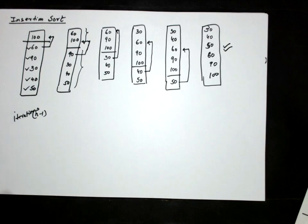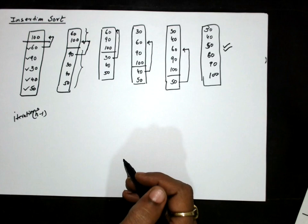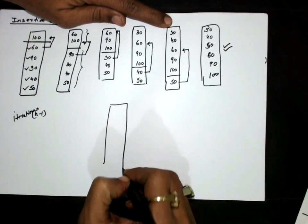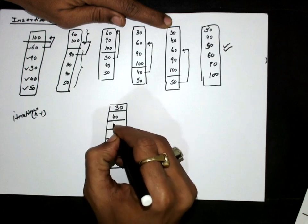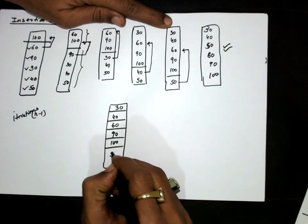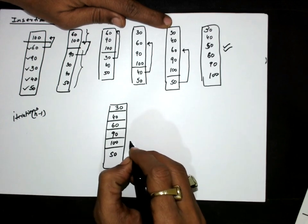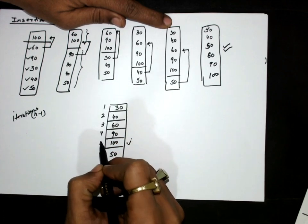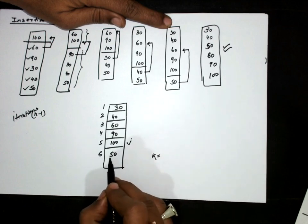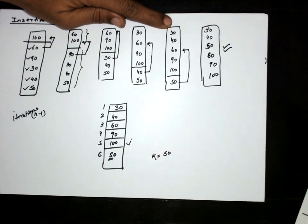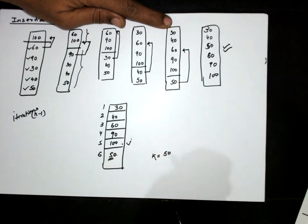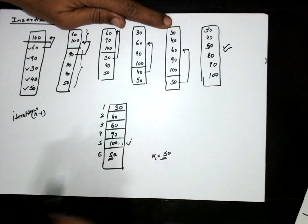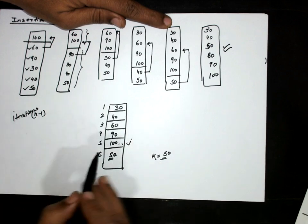Let us see how insertions are taking place. Consider a case where we have to insert 50 into an array. The elements are 30, 50, 60, 90, 150. We have to insert this 50. Let us say the position is j, and the element to be inserted is k, which is 50. If we compare this 50 with the jth element, 50 is small and 100 is large.